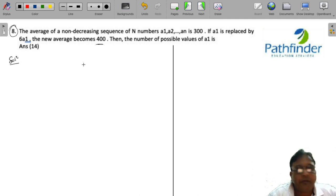So let us first of all just jot down all the information that is given. We have a1 plus a2 plus a3 and so on till an, and this is equal to 300 times n because the average of these numbers is 300.